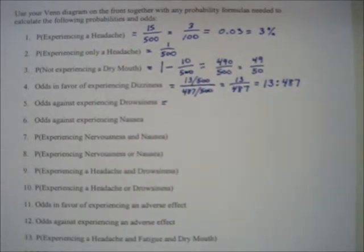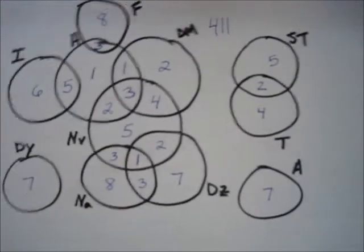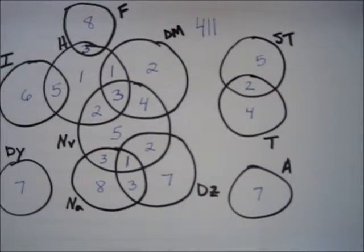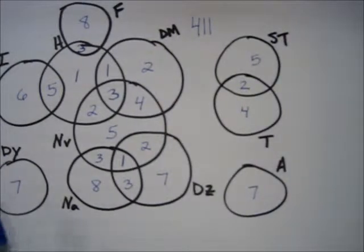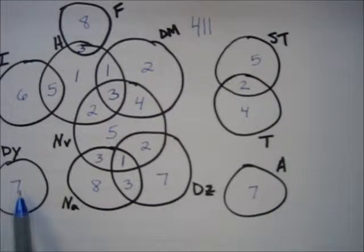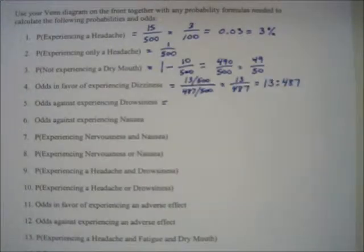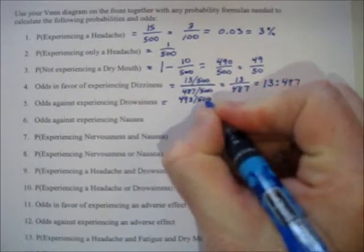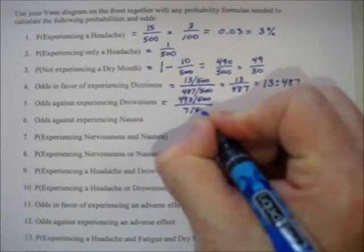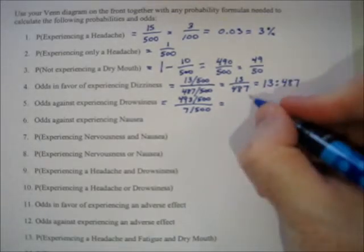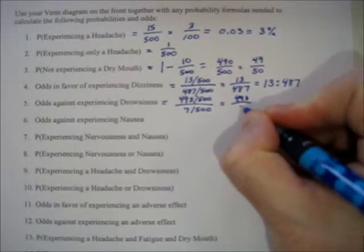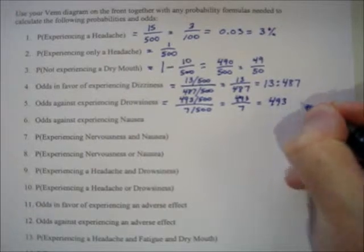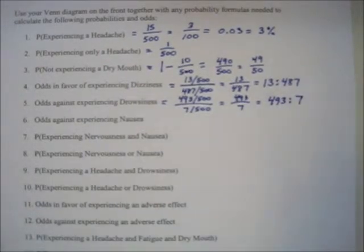Odds against is worked the other way — it's probability of failure divided by probability of success. Looking for drowsiness, there were 7 people who were drowsy. So 493 out of 500 weren't and 7 out of 500 were. That gives you 493 divided by 7, which becomes the odds statement 493 to 7.